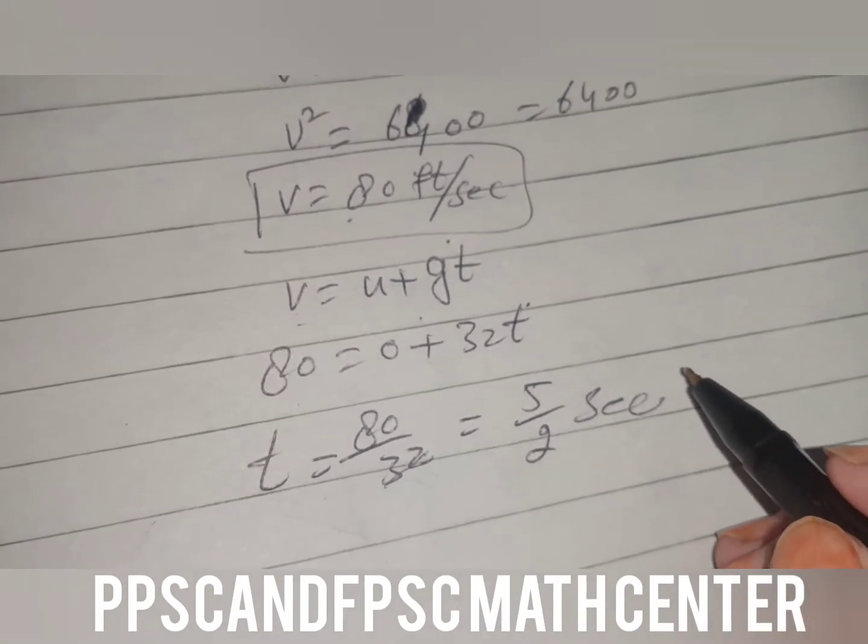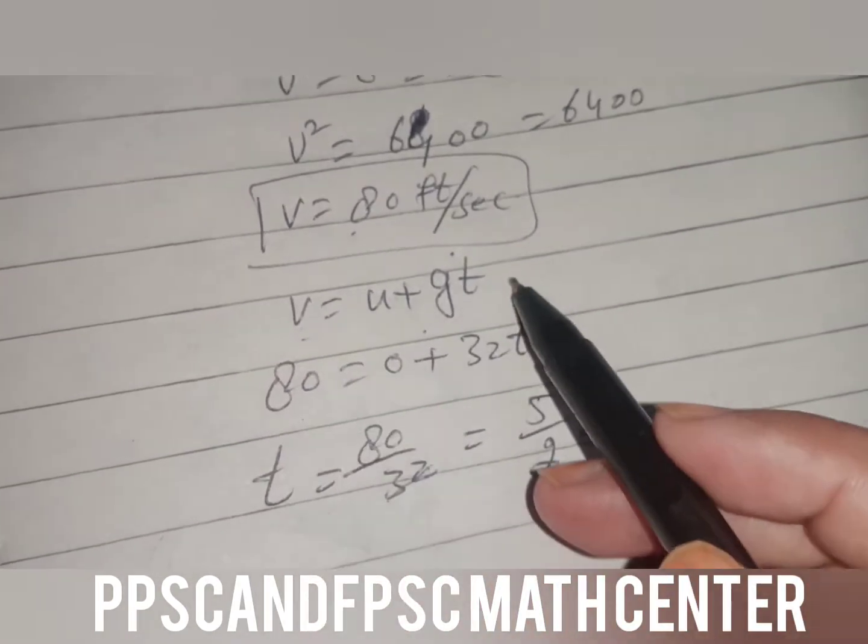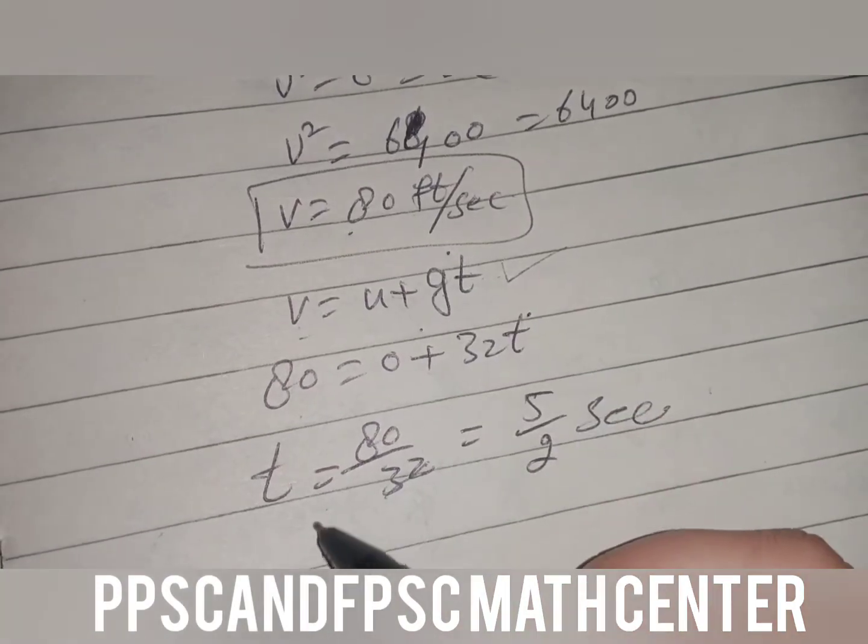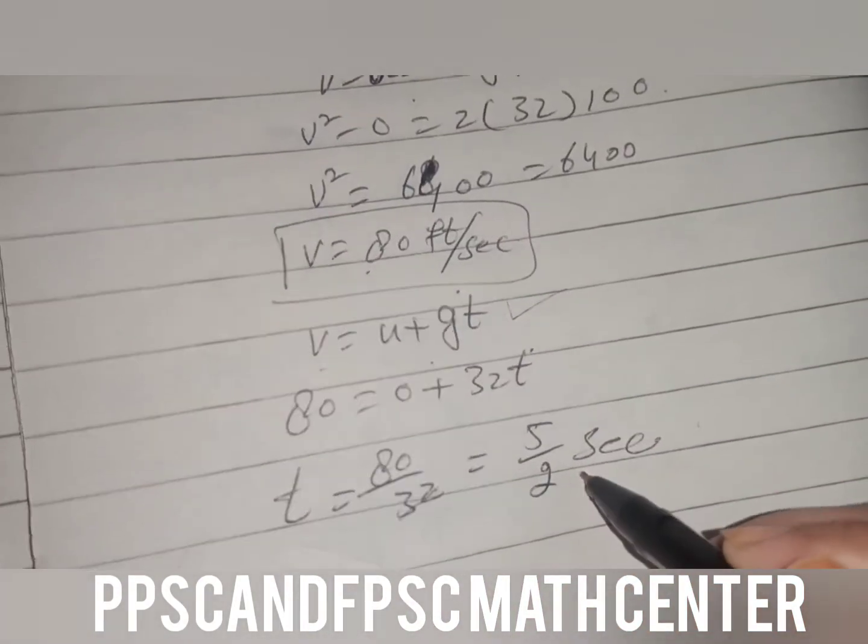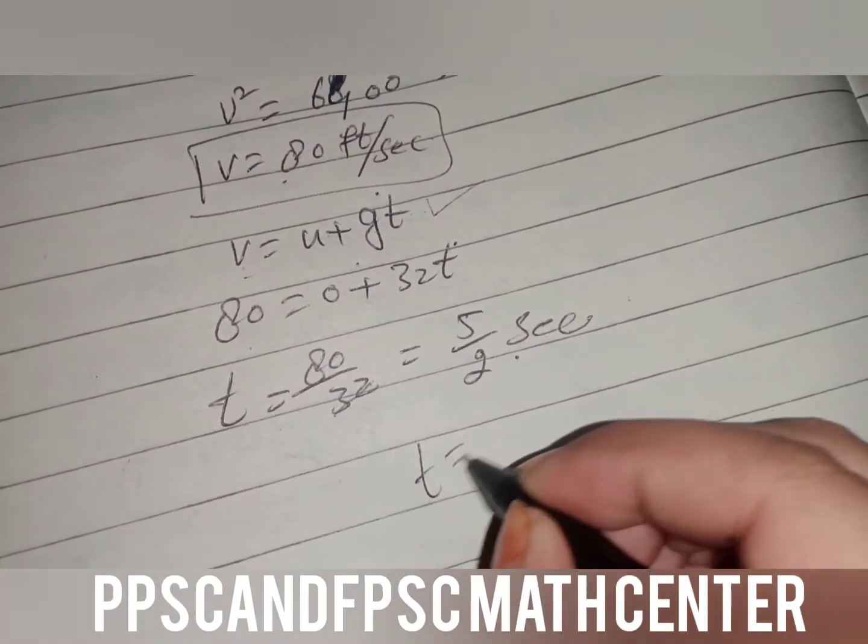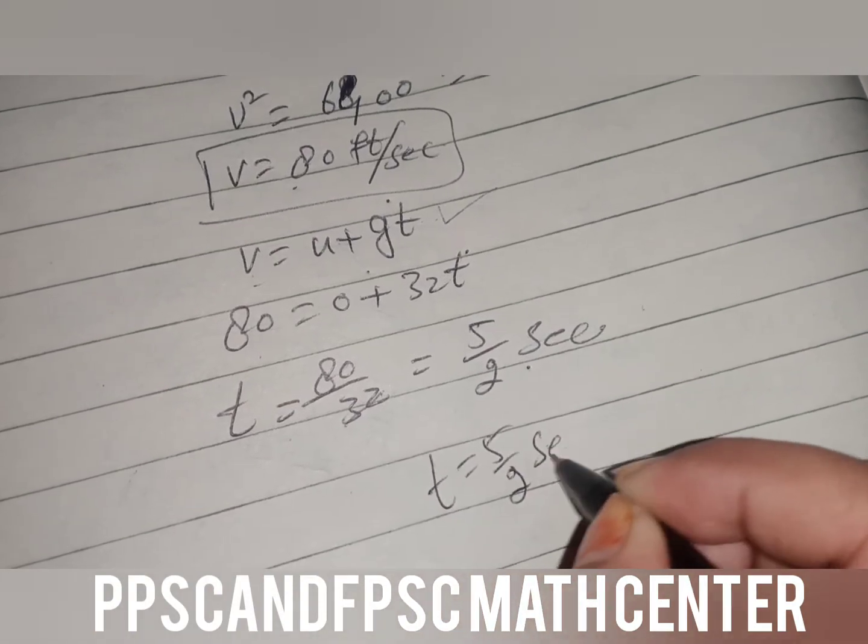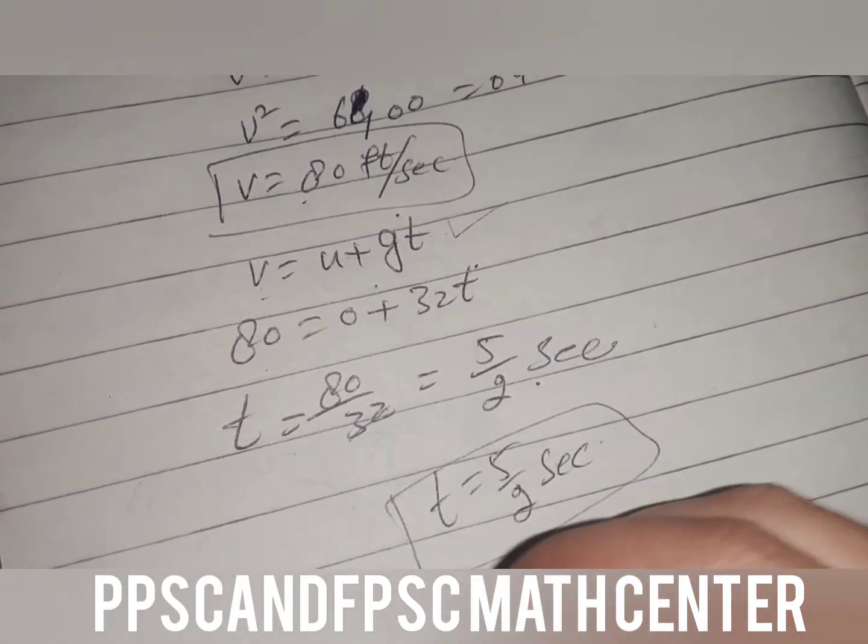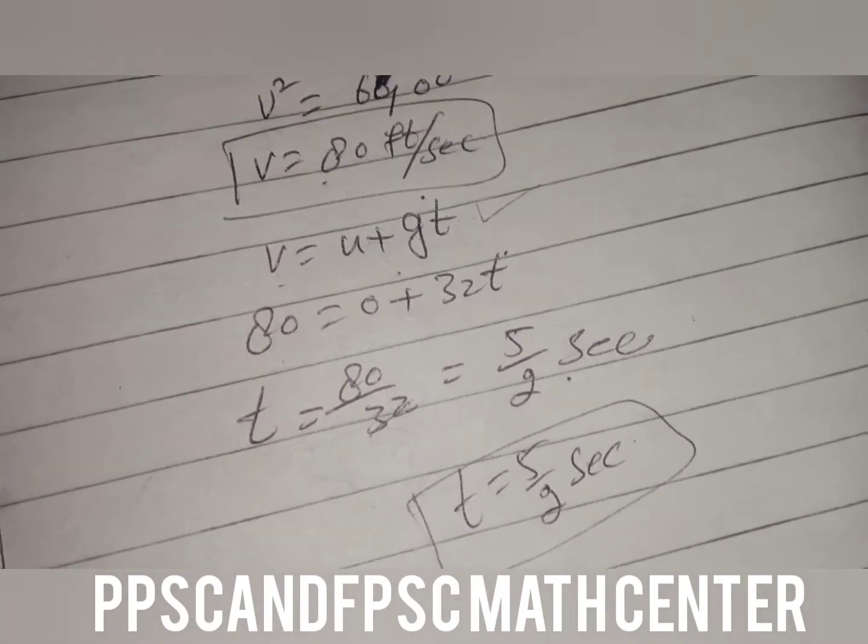So 80 = 0 + 32t, which means t is equal to 5/2 seconds. Time is the standard unit.